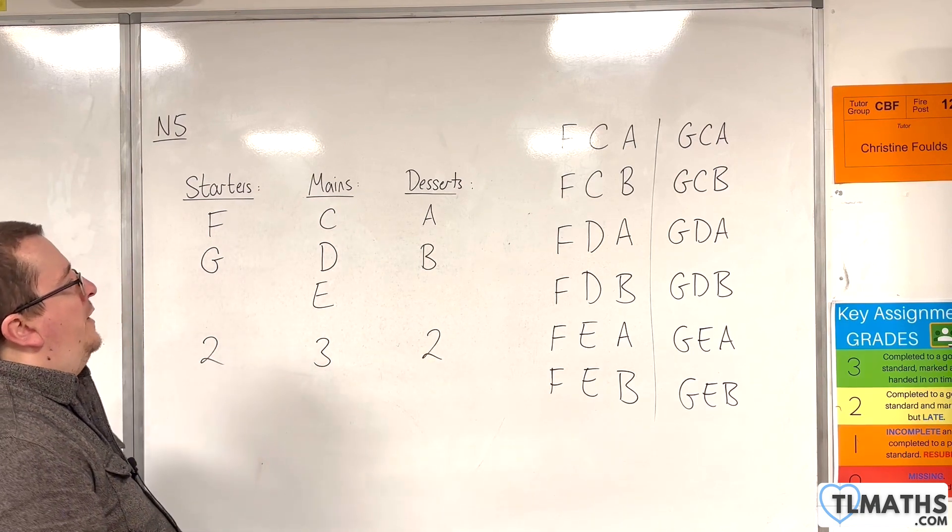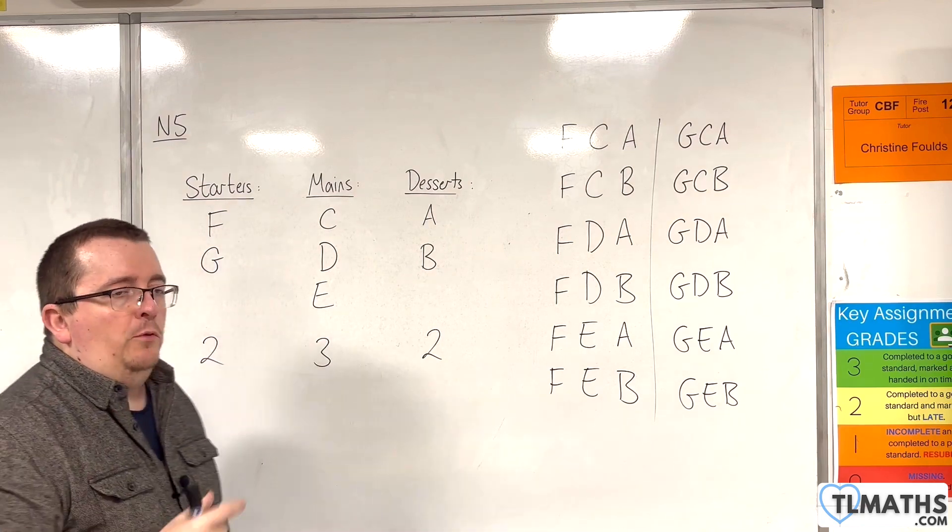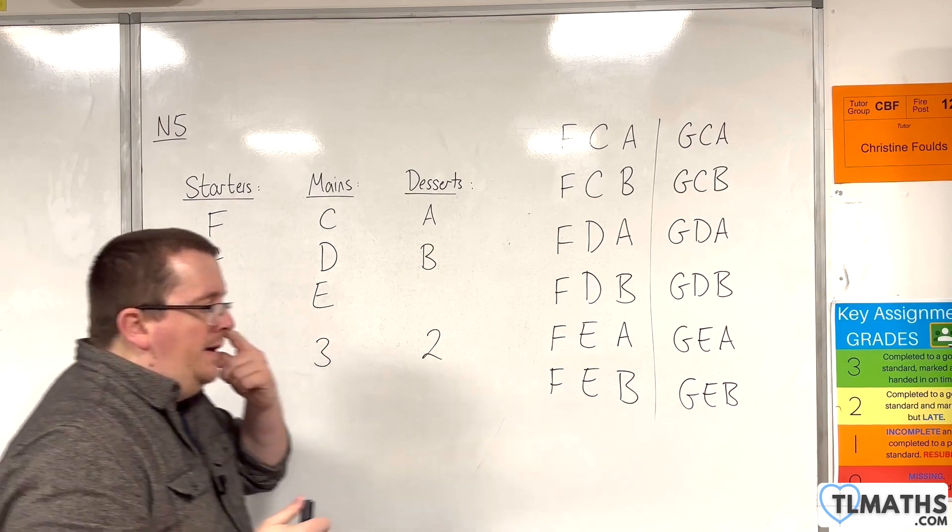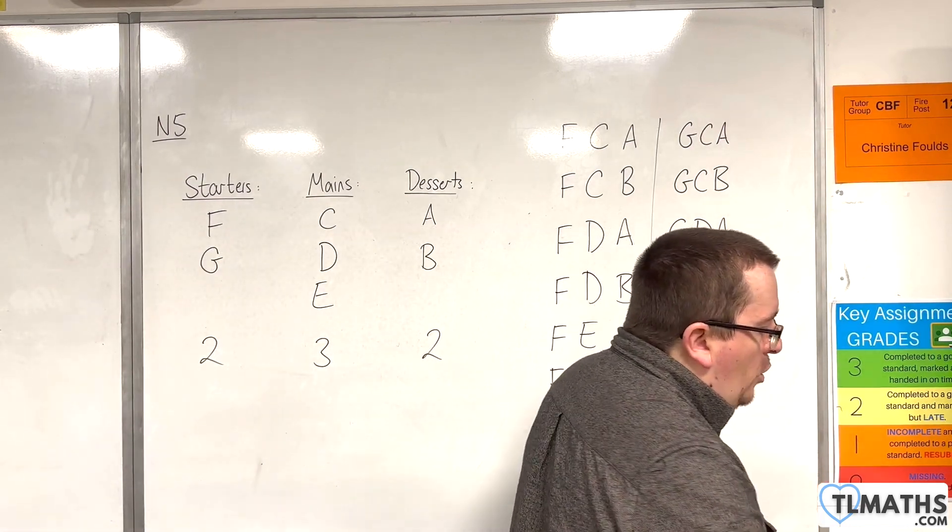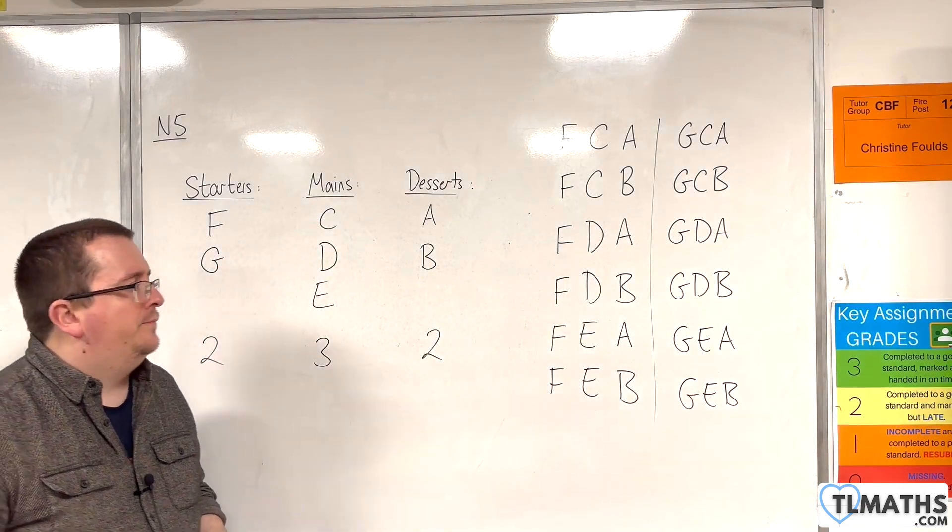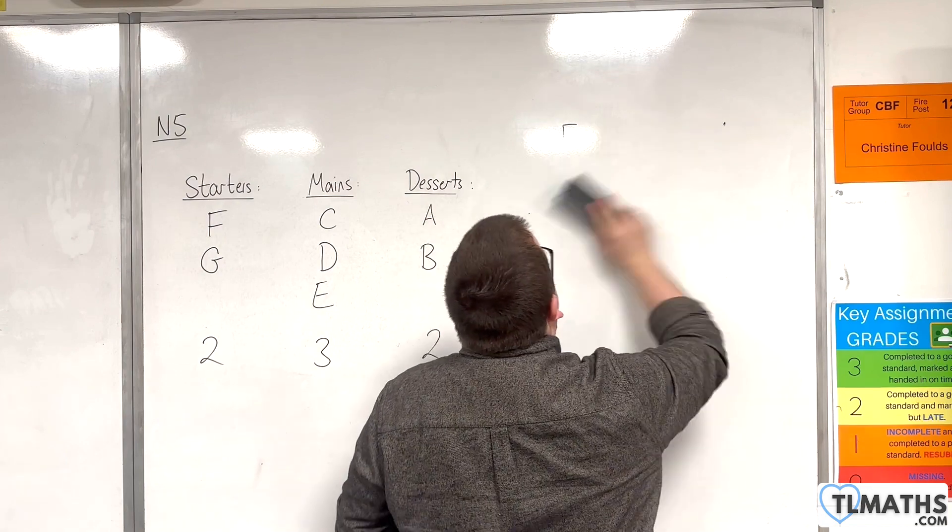So, what you're seeing is that it is the product of the possible choices that we have. That's quite a neat way of being able to check that you've got all of the possible variations that you have. Now, we can transfer this to different scenarios as well.